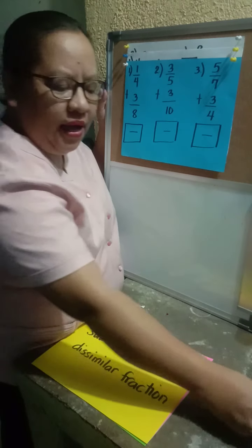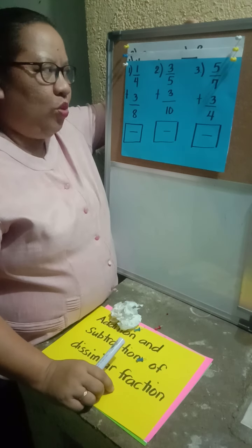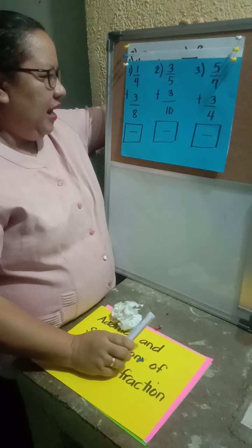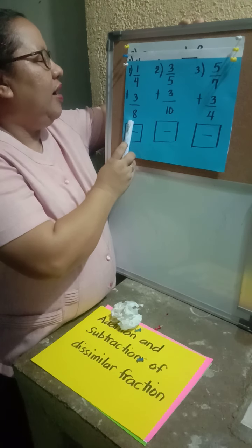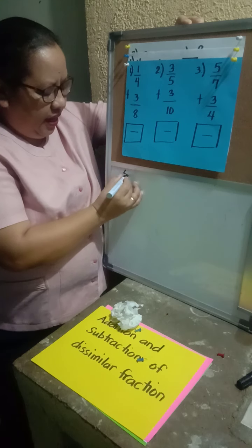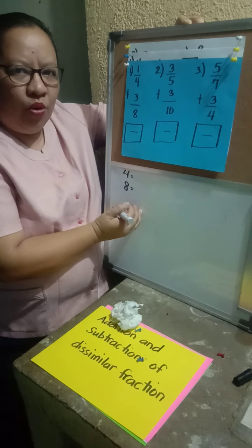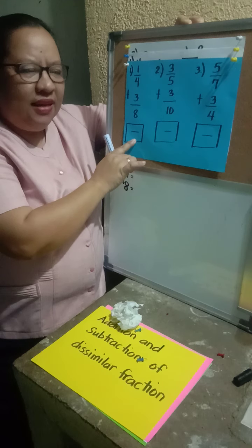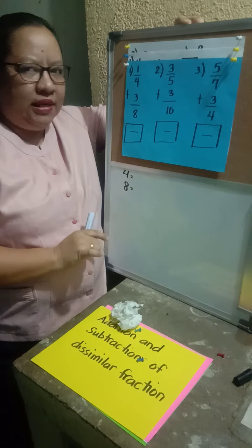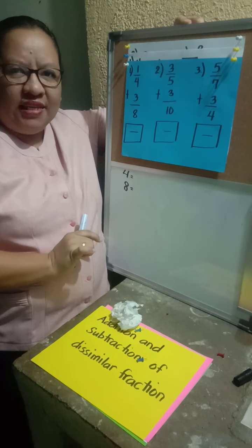Let's find out how to solve fractions when their denominators are different. Let's try example number one: we have 1/4 and 3/8. What are the denominators? We have 4 and 8. Are 4 and 8 the same? No, so we cannot add yet because their denominators are different. We need to make them similar fractions first.